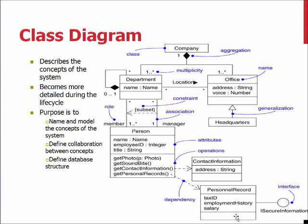The class diagram, as illustrated here, is one of the most used diagrams. It describes the concepts of the system and is usually one of the first ones defined when the system architecture is being built. It is also usable considering that you can expand or define details in class diagrams with analysis approaches such as BCE analysis, which we will be discussing later.